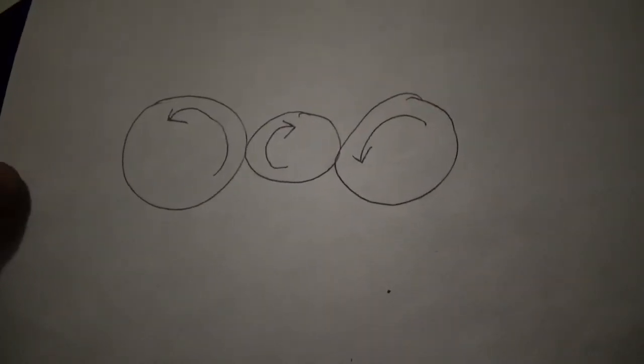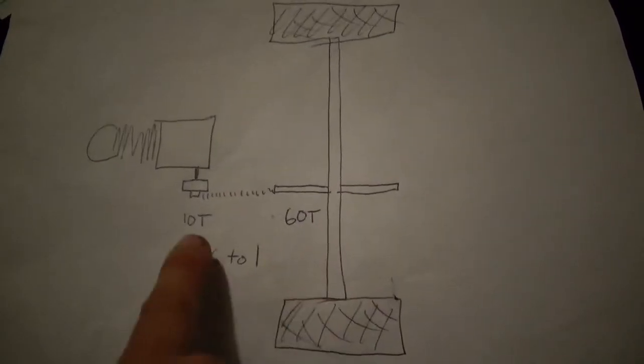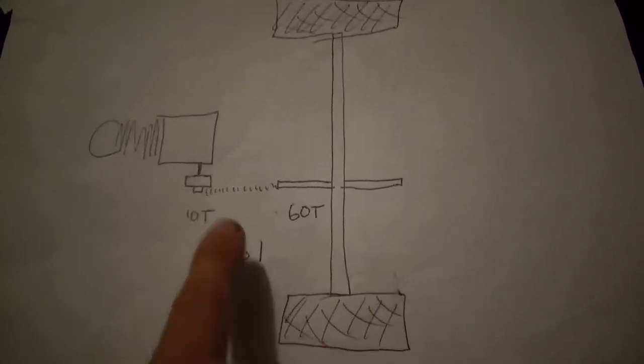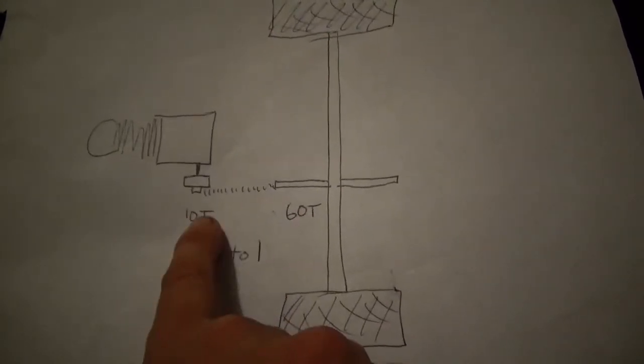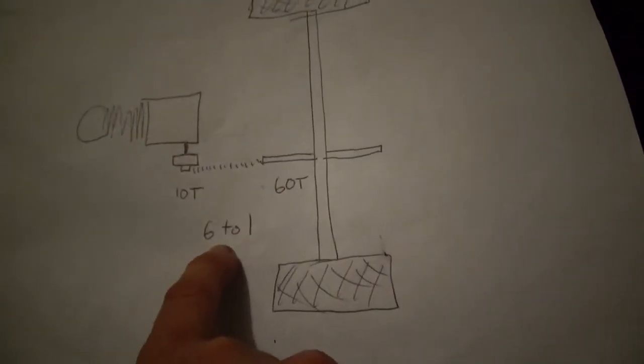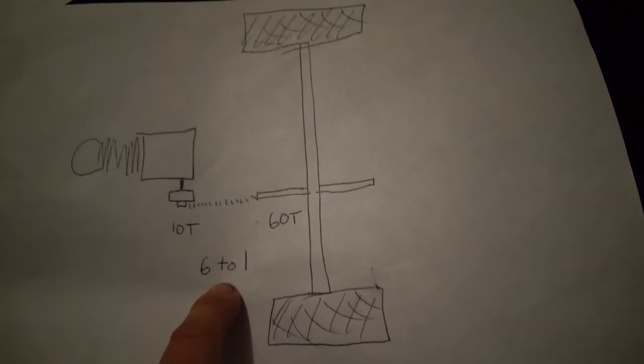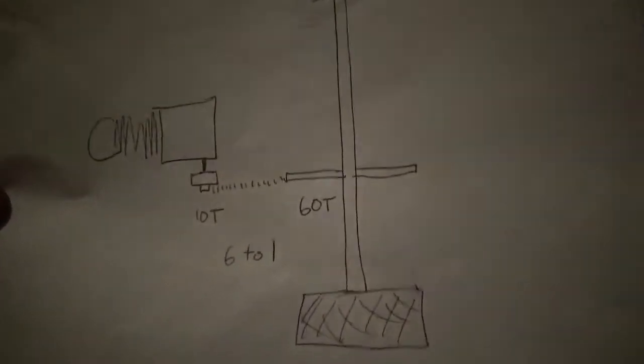Here we have a basic go-kart setup. You'd have 60 teeth in the back, 10 teeth on the front on a centrifugal clutch. Dividing these two together, this is a six-to-one ratio.